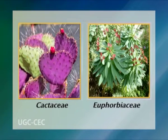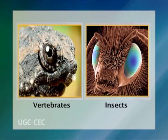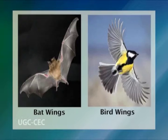For instance, evolution of succulent, water-storing stems in response to desert conditions in the Cactaceae — the cactus family of the Americas — and the Euphorbiaceae, the spurge family of South Africa, provides a classical example of convergent evolution. Similarly, the evolution of eyes for sight in vertebrates and insects, and the evolution of wings for flying in birds and bats, are also examples of convergent evolution.